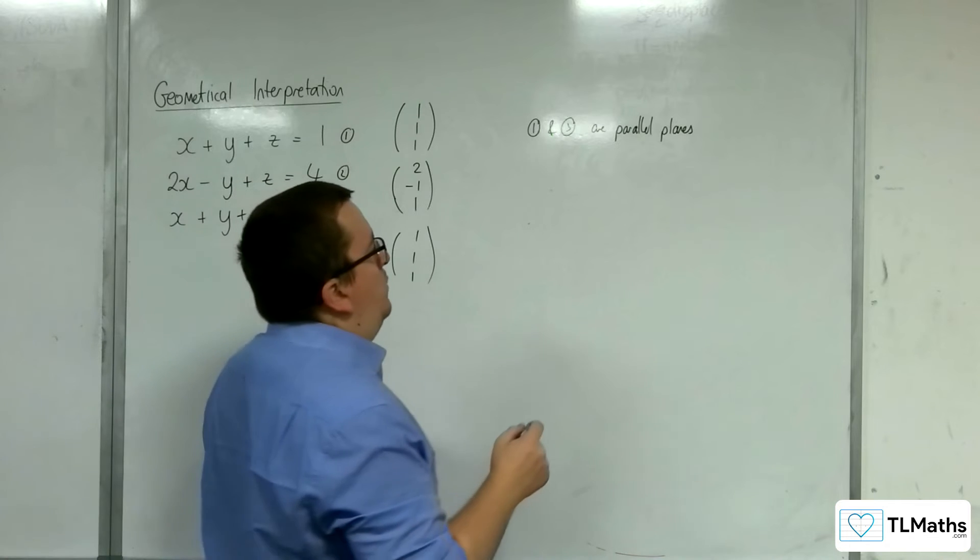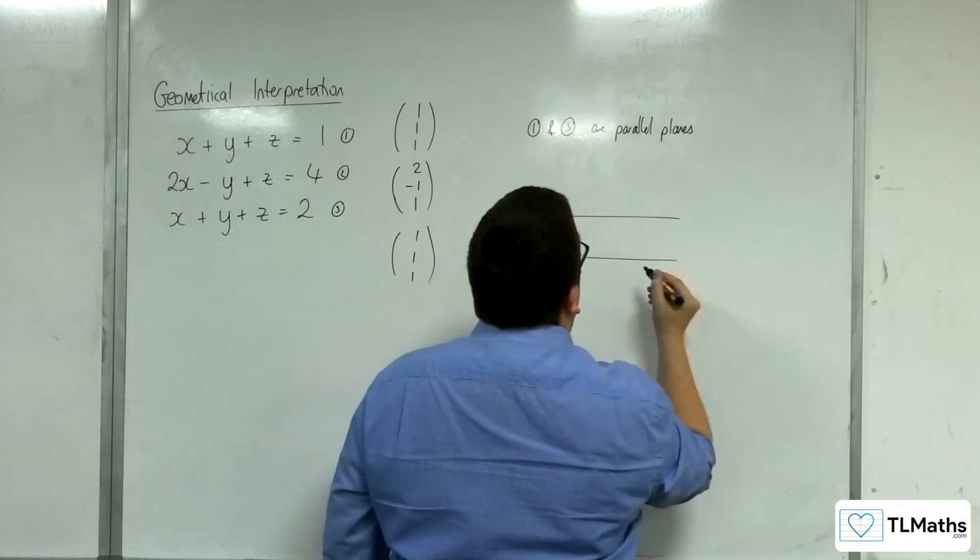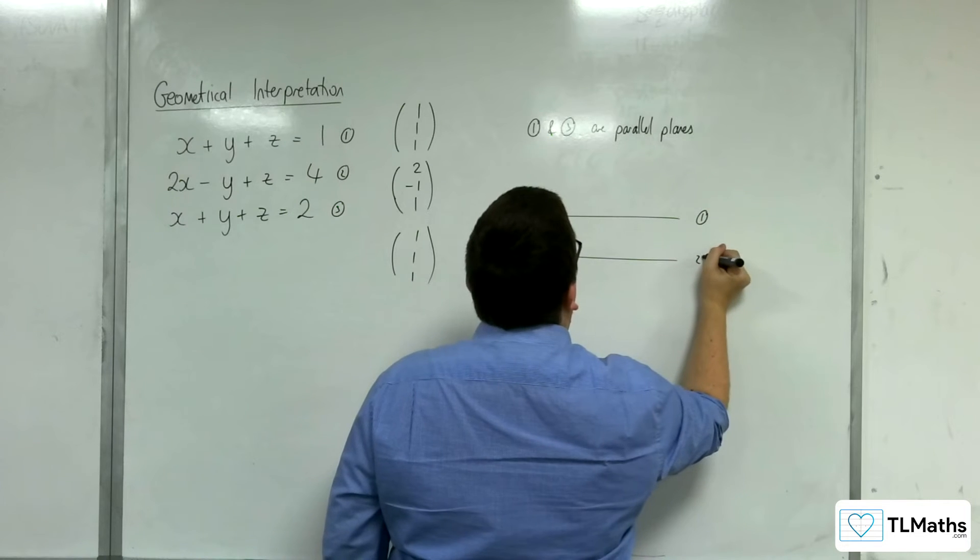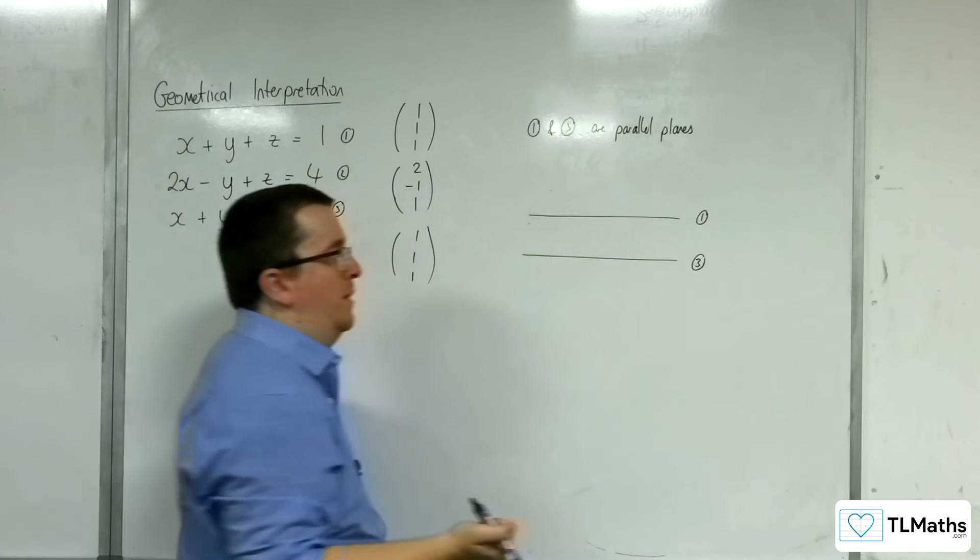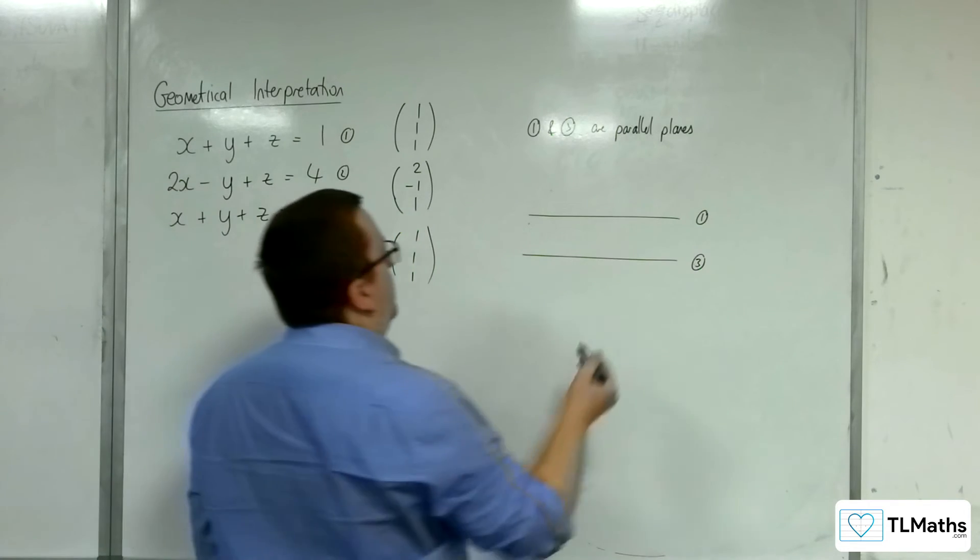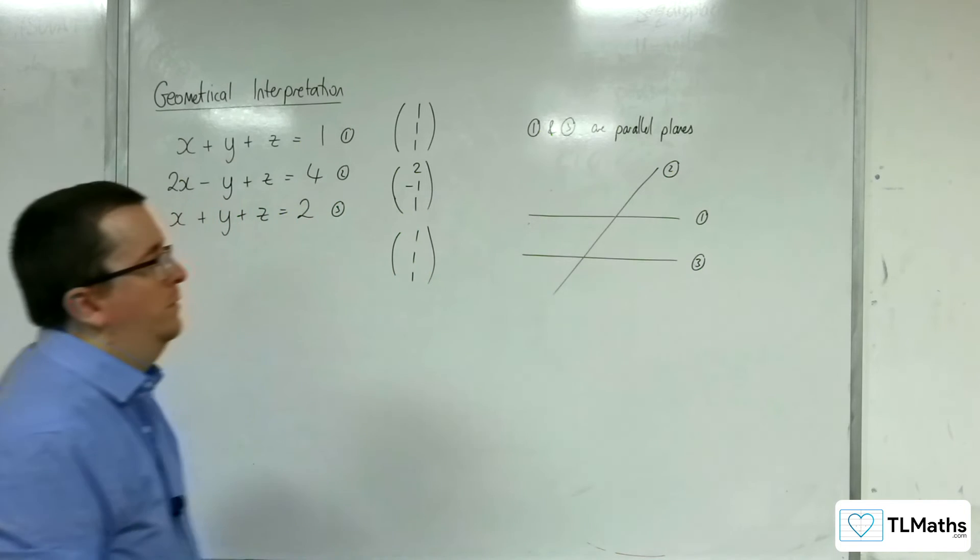So actually, what we've got, if we look side on, is we're going to have these two parallel planes, equations 1 and equations 3, or plane 1 and plane 3. And we're going to have plane 2 intersecting these two.